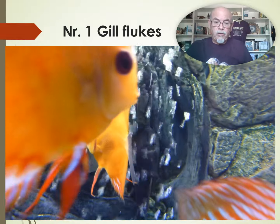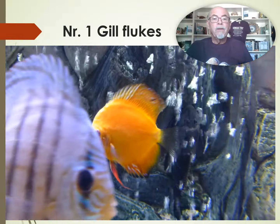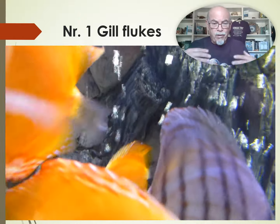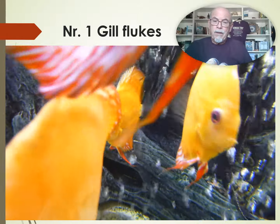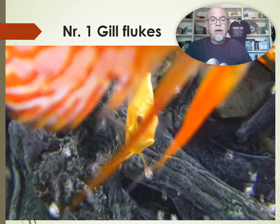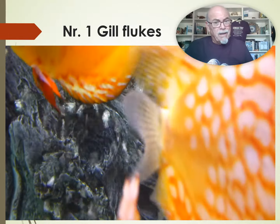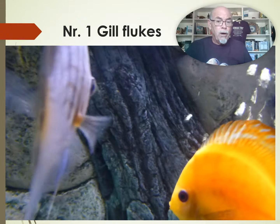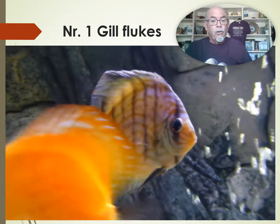Here is one of the discus — this Marlboro one. You can see its respiration in the gill is not normal. It's heavy breathing and it's separating. It was getting slowly skinny. You can see it's getting a little bit skinny already. The other ones might look okay, but they might have also some worms, but not so bad yet. So it's the time now to act, to take action and to make sure you can start controlling.